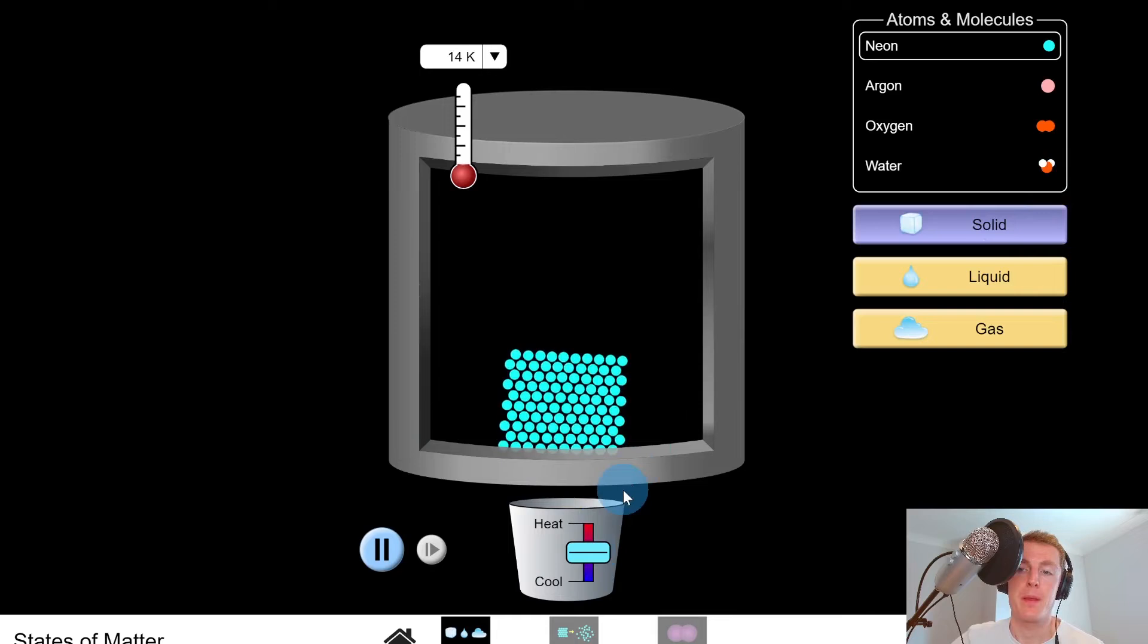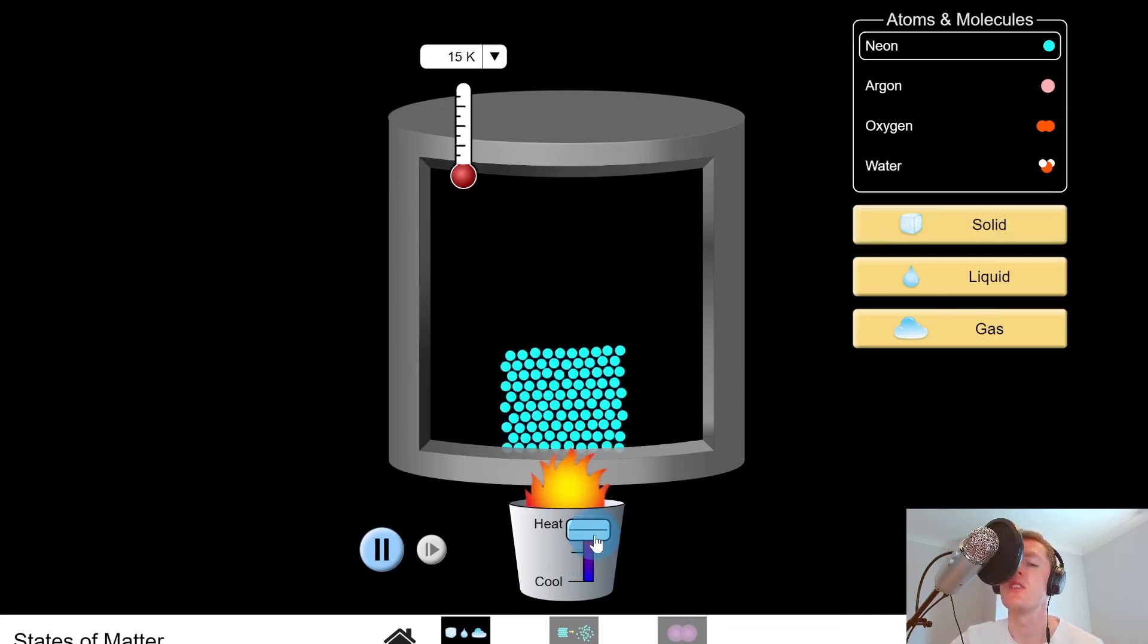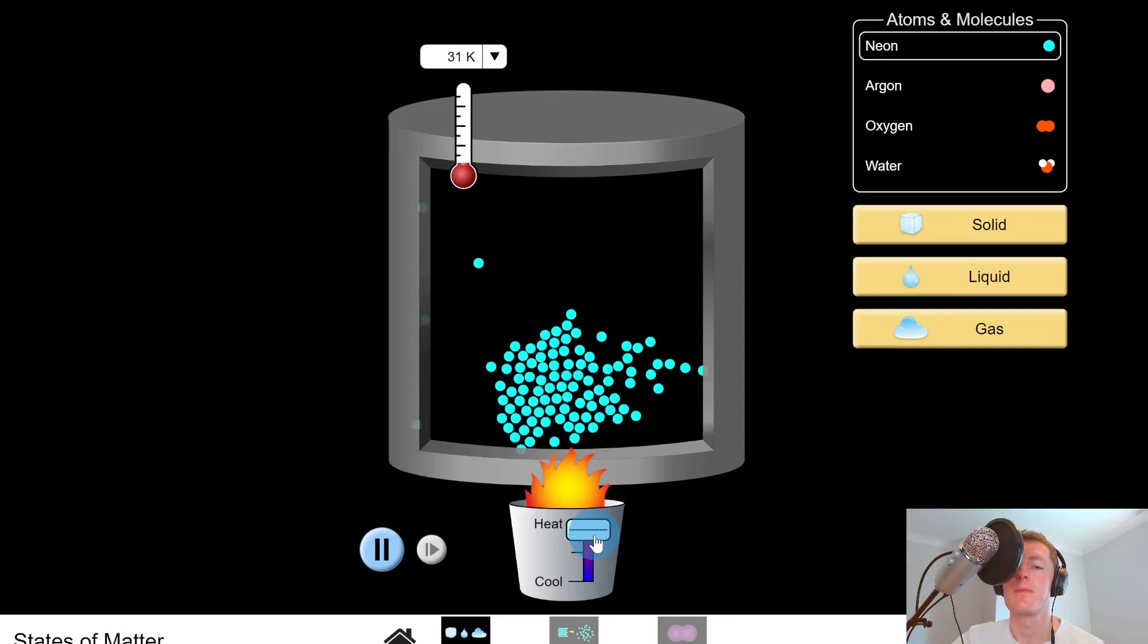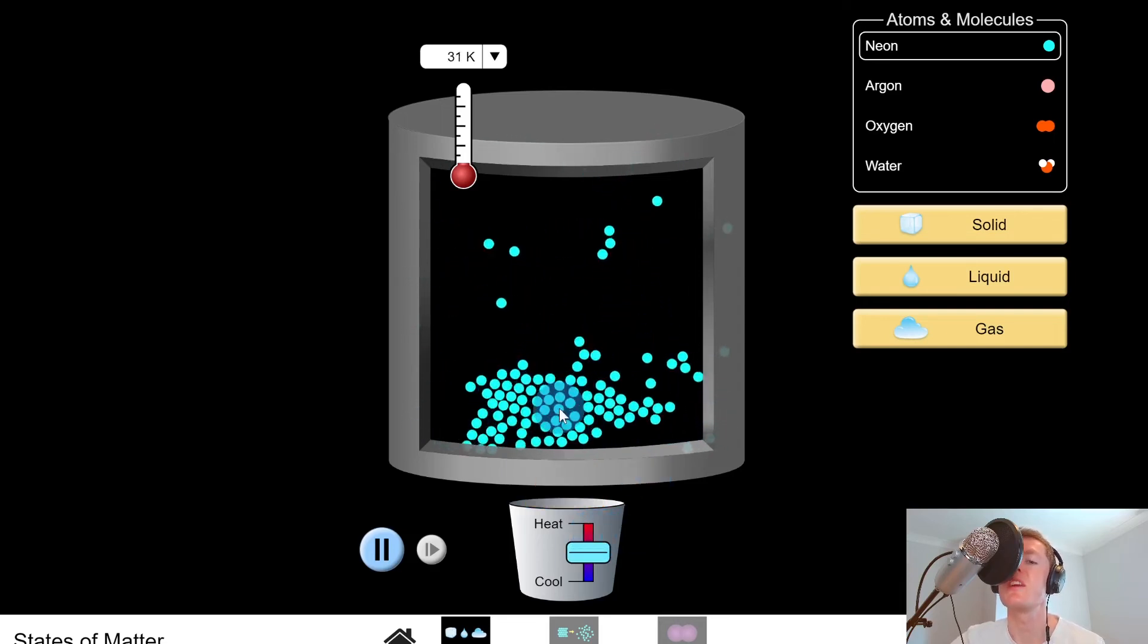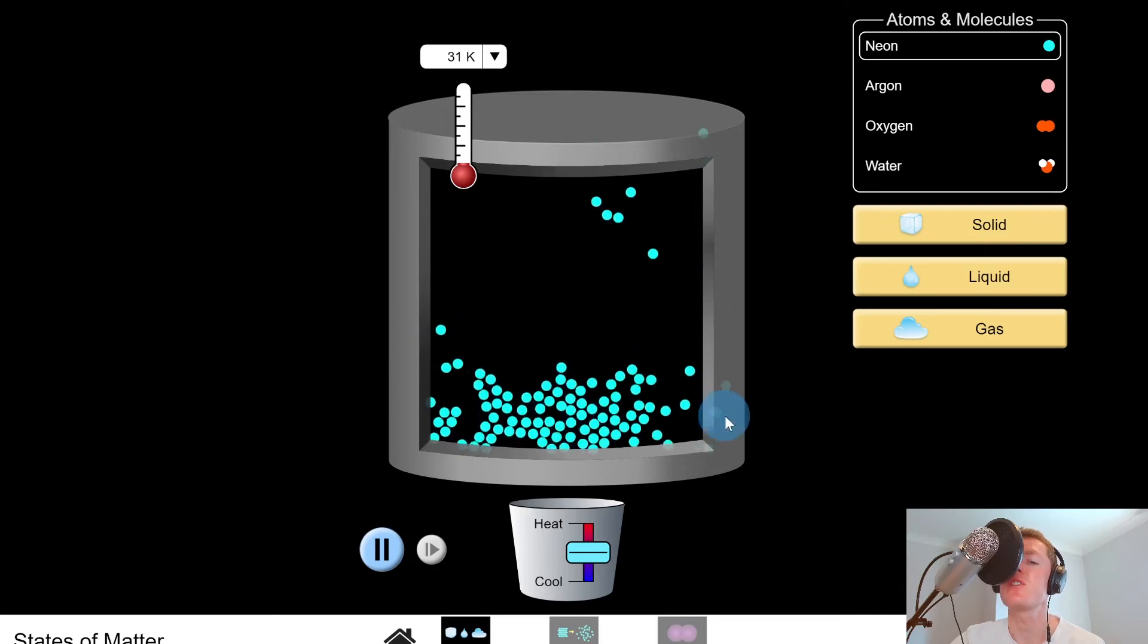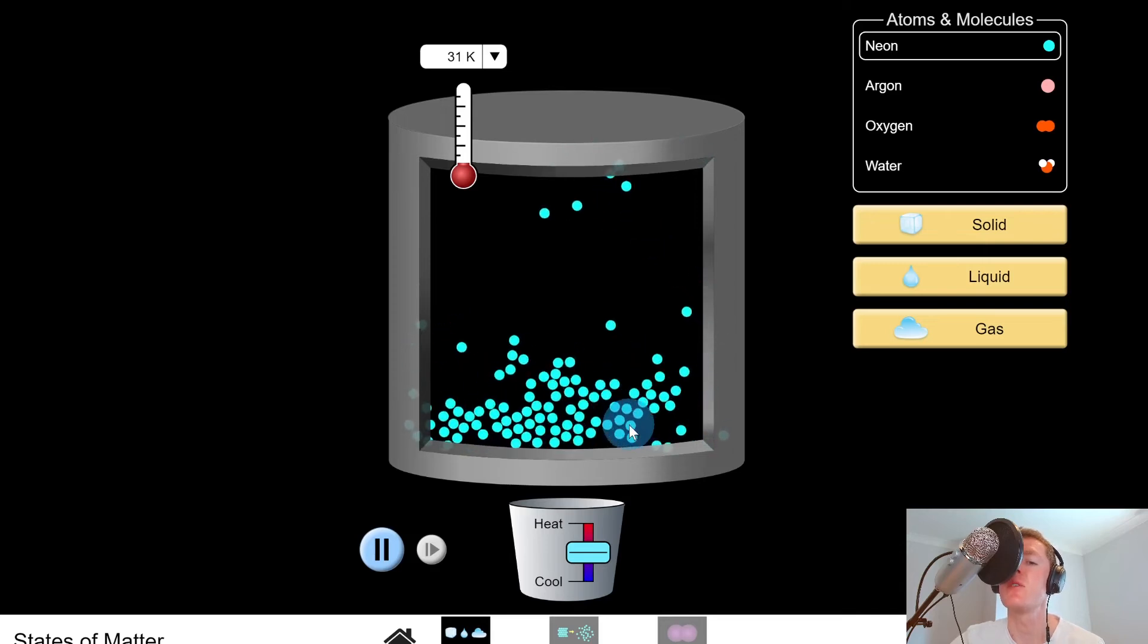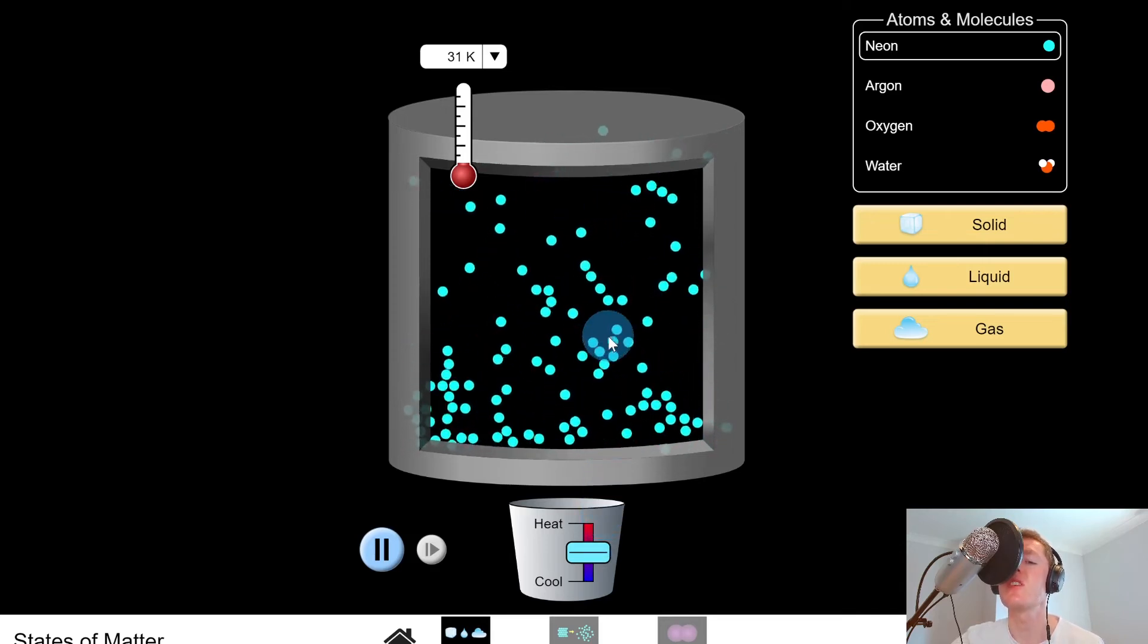So let's say we start off with a solid and we heat it up. This should cause the solid to melt into a liquid, also known as fusion. So you'll start to see there's a lot more space in between the particles and they're starting to take the shape of the container now because we've applied some heat.